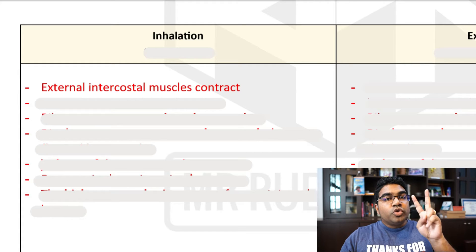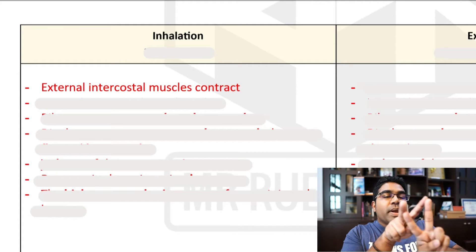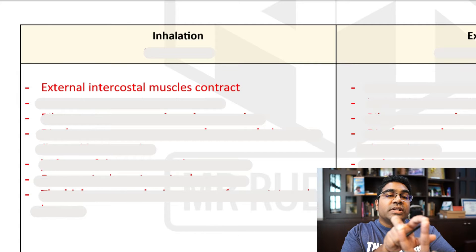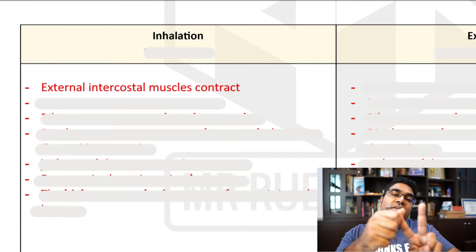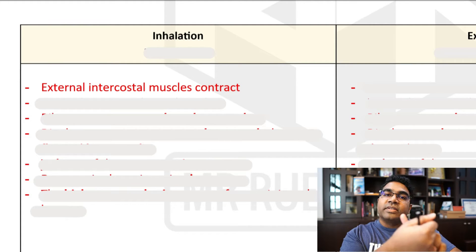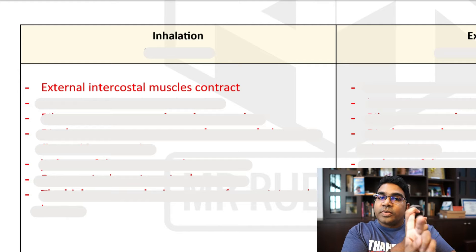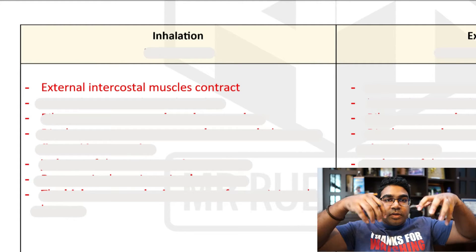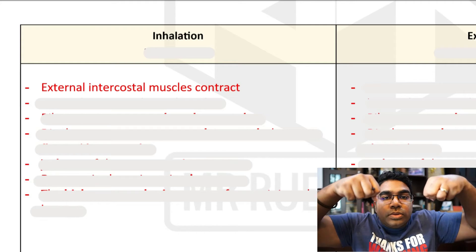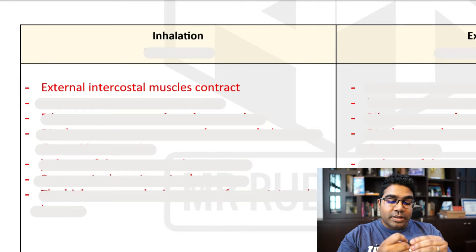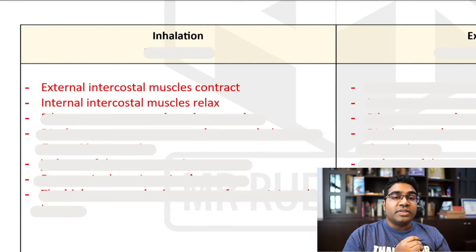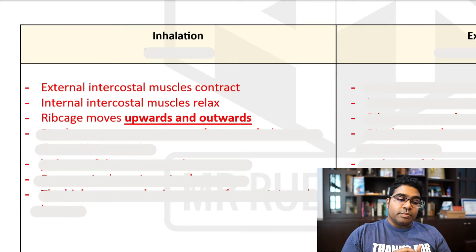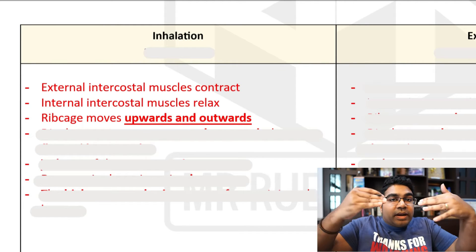The intercostal muscles are an antagonistic pair — meaning when one contracts, the other relaxes. So when the external intercostal muscle contracts and pulls the ribcage up and out, the internal intercostal muscles must relax. The net effect is that the ribcage is pulled upwards and outwards, expanding the space.